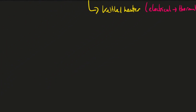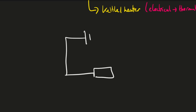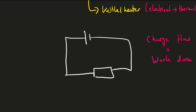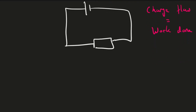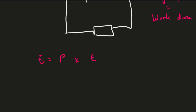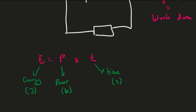Now let's look at a circuit. We know that if energy is transferred, work is being done. In a circuit, whenever you have charge flow, work is being done, and we can calculate how much energy is transferred using the equation: energy transferred equals power multiplied by time. The energy transferred is in joules, power in watts (or joules per second), and time in seconds.